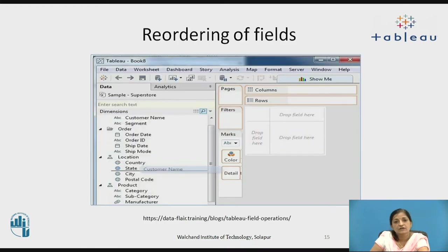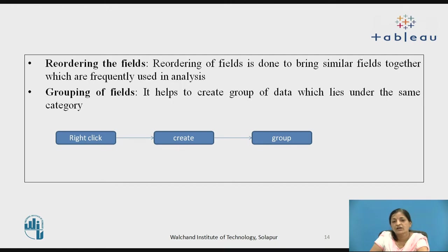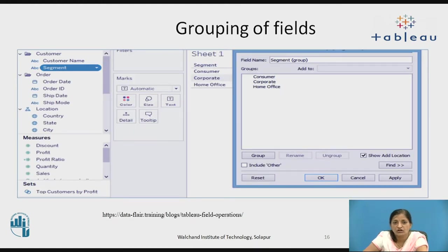For reordering fields, right-click and you can see the list of dimensions and measures. Drag the field which is to be reordered — for example, dragging customer name to be placed between the fields state and city, so it will put customer name between state and city. For grouping of fields, right-click, then choose create, and in create go to group. In this example using the superstore dataset, the segment measure is dragged to the field name in the grouping of fields dialog box, and there are three types of groups: consumer, corporate, and home office. All analysis will be shown for these three groups.